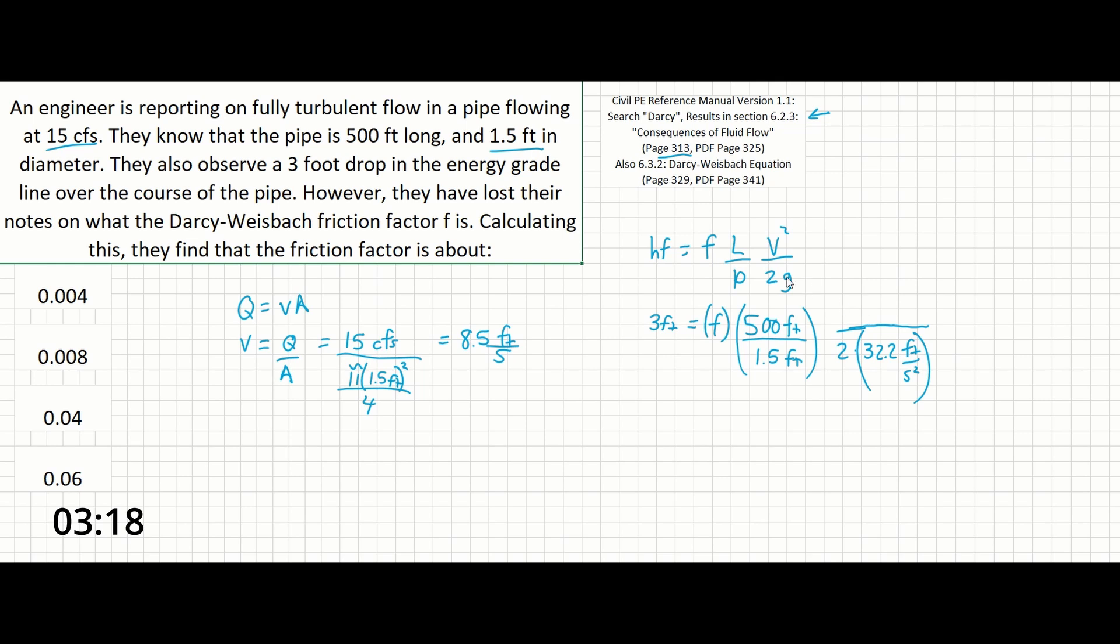Plugging in 8.5 feet per second squared, we can check the units: feet squared over seconds squared, all over feet over seconds squared. We're left with units of feet here. These will cancel, leaving feet on this side and feet over here, which will cancel.